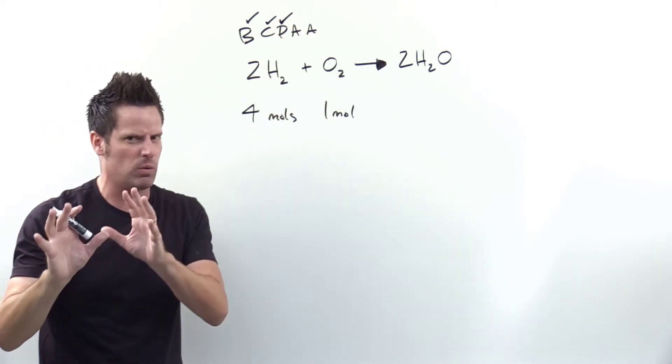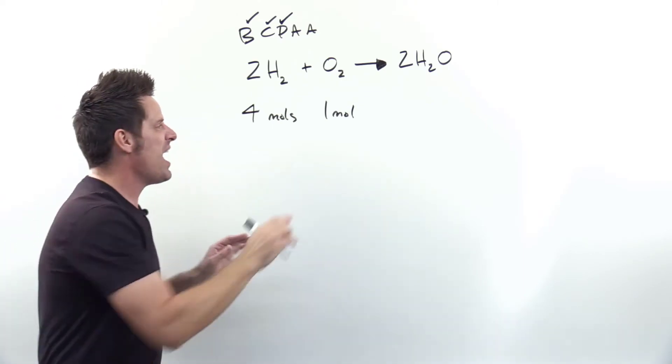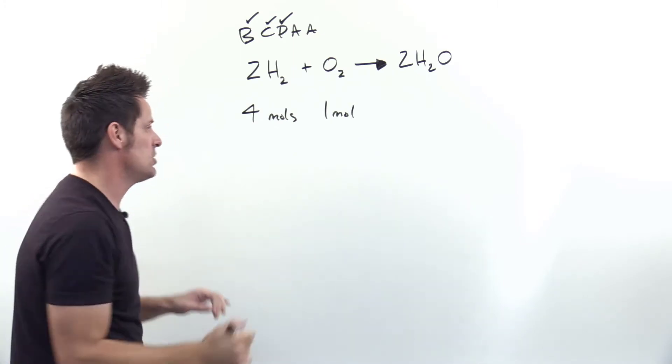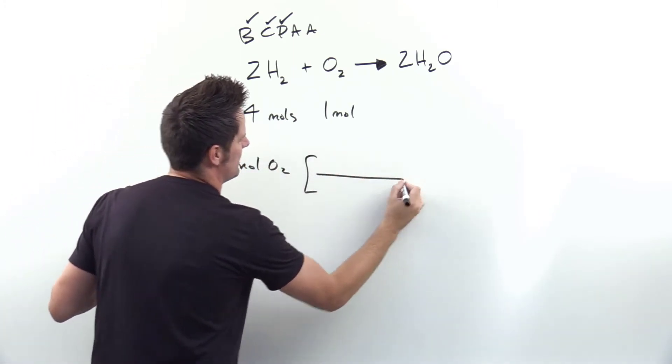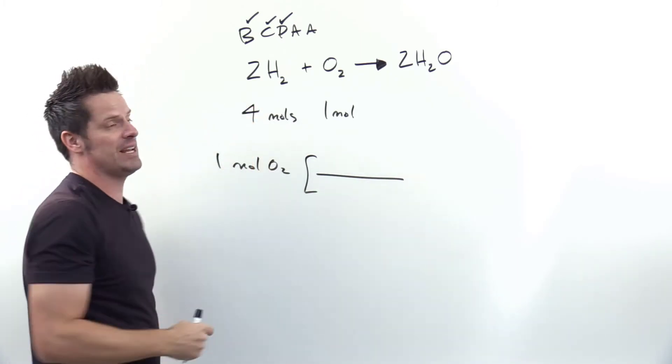Now we go to step A, which is really where things get exciting. Step A: Answer the question, if I have one mole of this reactant, how many moles of the other reactant do I need? So we picked O2, so we're gonna write down one mole of O2, and I want to discover using dimensional analysis how many moles of the other thing we need.